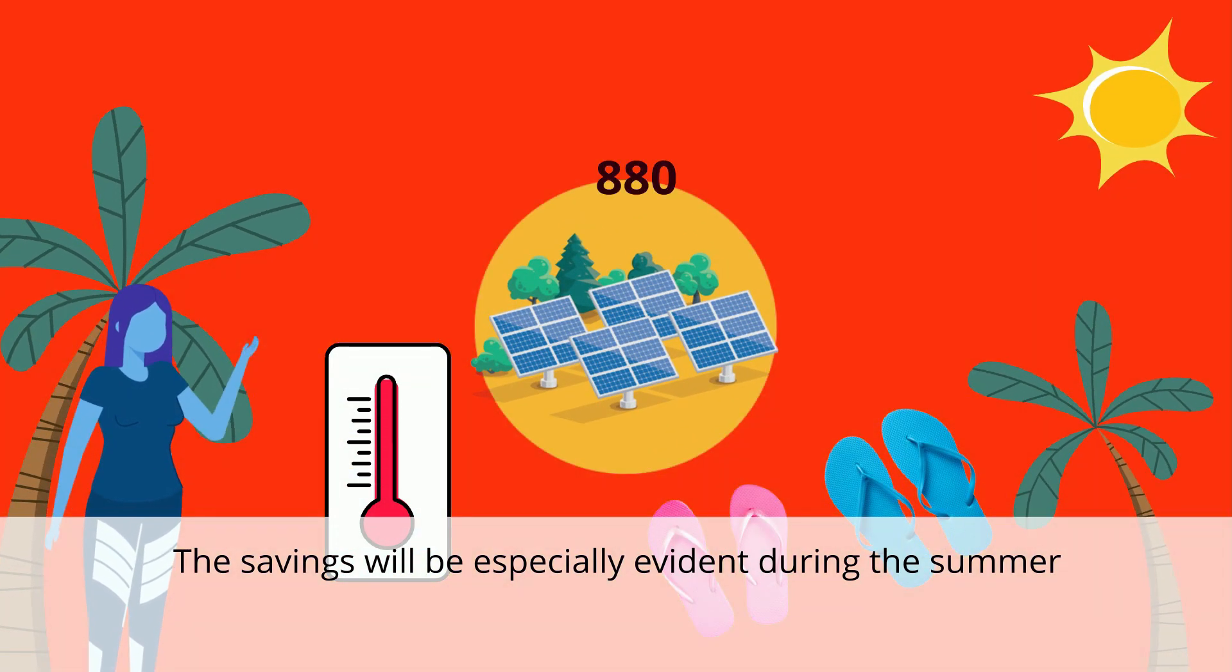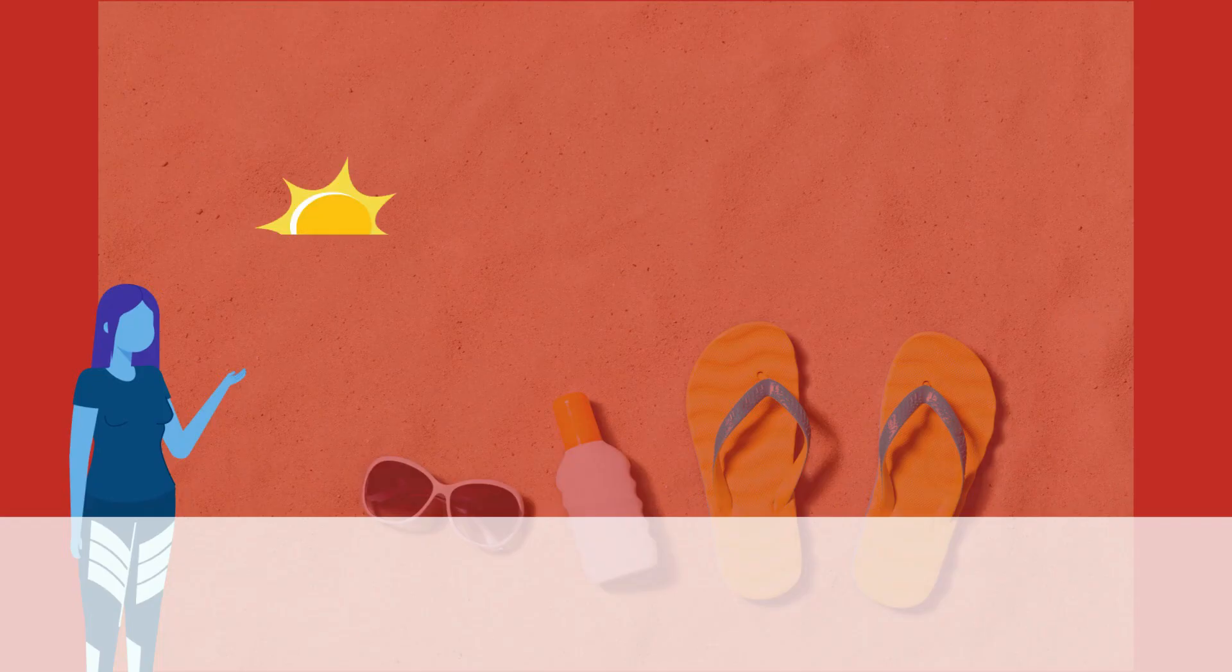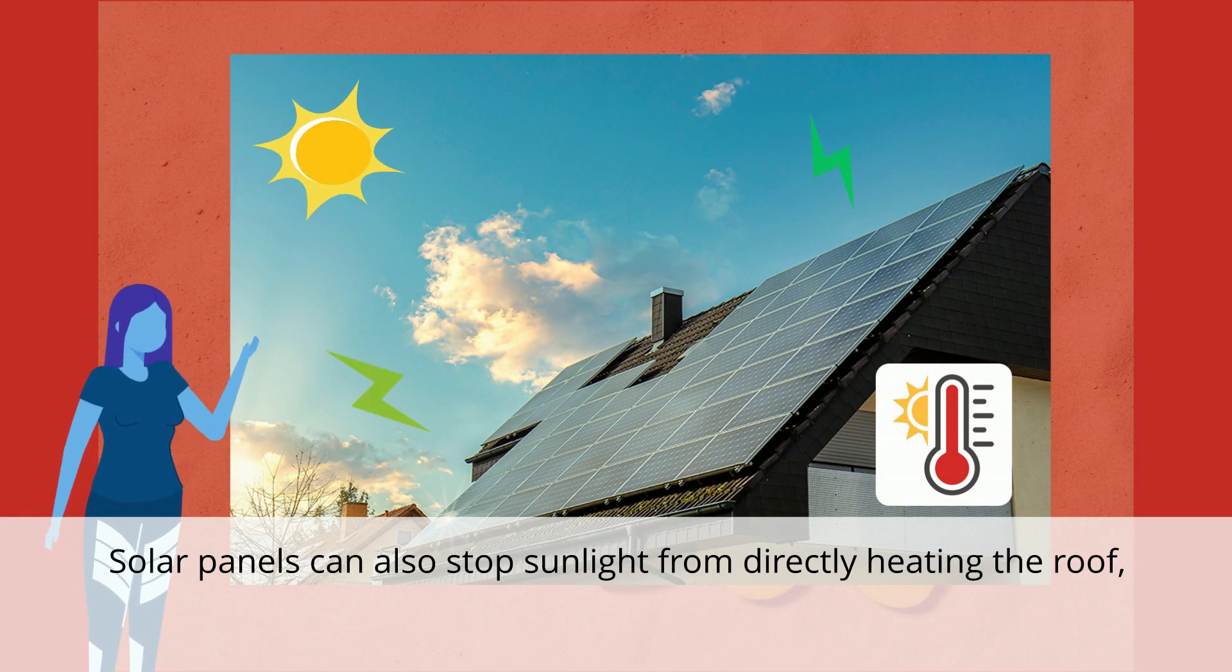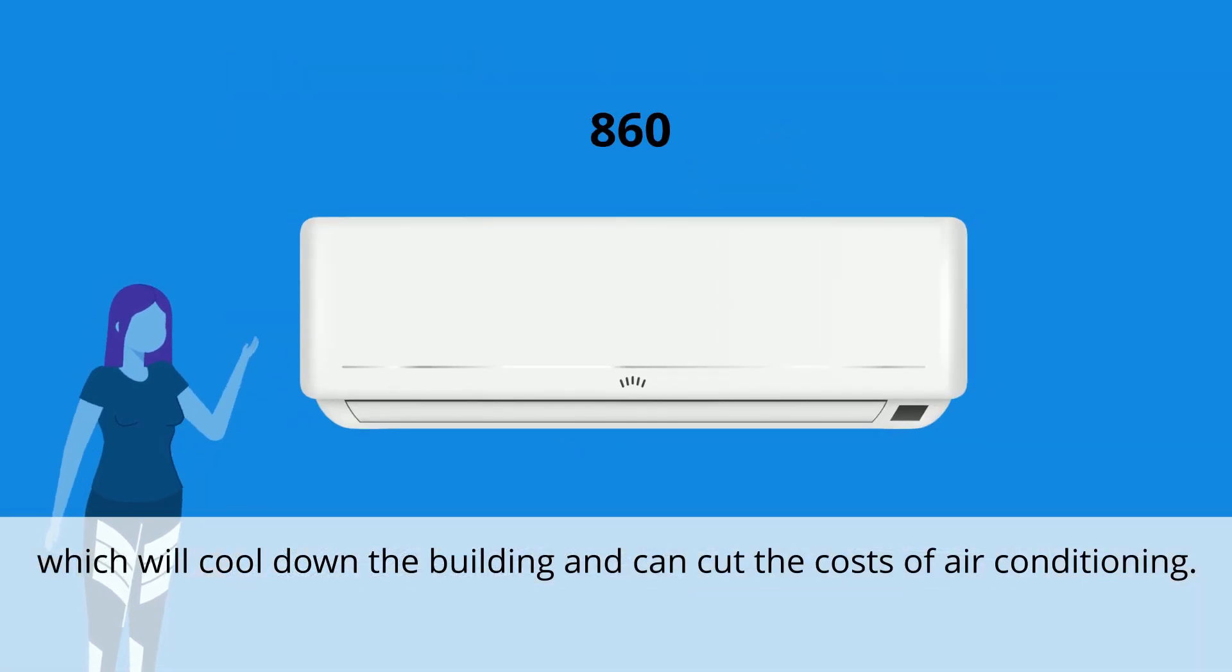The savings will be especially evident during the summer when energy usage goes up. Solar panels can also stop sunlight from directly heating the roof, which will cool down the building and can cut the costs of air conditioning.